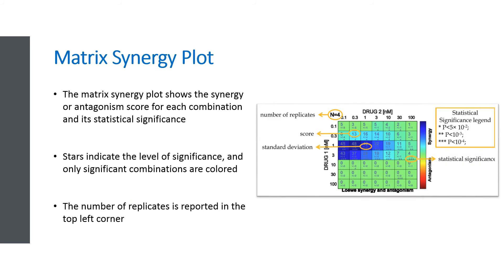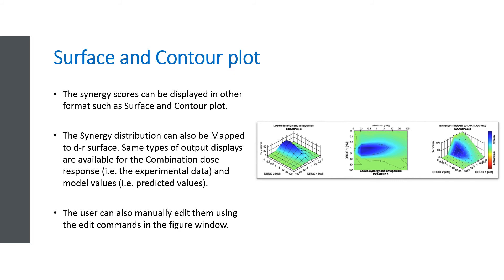Under the Results subfolder, you can also access the Matrix Synergy plot. The Matrix Synergy plot shows the Synergy or Antagonism score for each combination and its statistical significance if the Test Significance option was selected. Stars indicate the level of significance and only significant combinations are colored. If the Test Significance option was not selected or only one replicate was available, no stars are displayed and all cells are colored. The number of replicates is reported in the top left corner. The Synergy scores can be displayed in other formats, such as the Surface and Contour plot. The Synergy distribution can also be mapped to the DR Surface. When plots are displayed by ComBenefit, the user can also manually edit them, such as changing the orientation of the 3D surface, zoom in or out, highlight specific values, using the edit commands in the figure window.